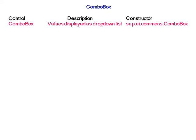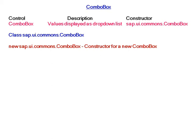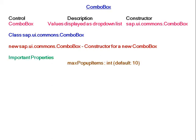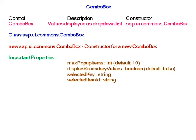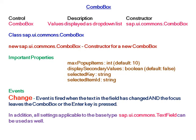For the combo box, the constructor is sap.ui.commons.ComboBox and belongs to the class sap.ui.commons.ComboBox. For creating a new combo box, the code you have to write is: new sap.ui.commons.ComboBox. The important properties for combo box are: max popup items, display secondary values, selected key, and selected item ID. The change event is fired when the text in the field has changed and the focus leaves the combo box, or the Enter key is pressed. In addition, all settings applicable to the base type sap.ui.commons.TextField can be used as well.